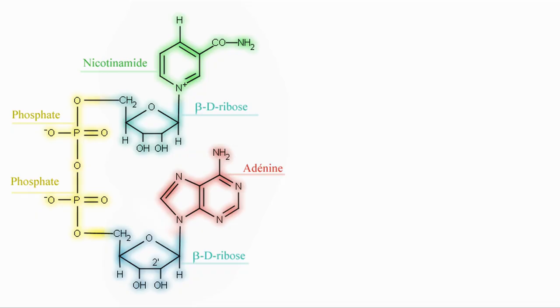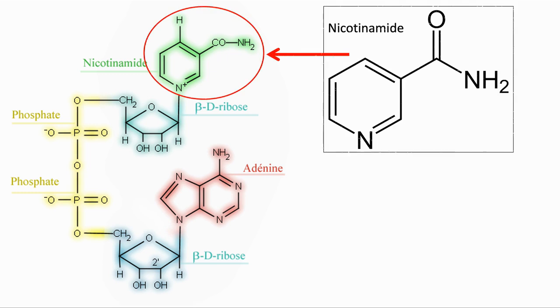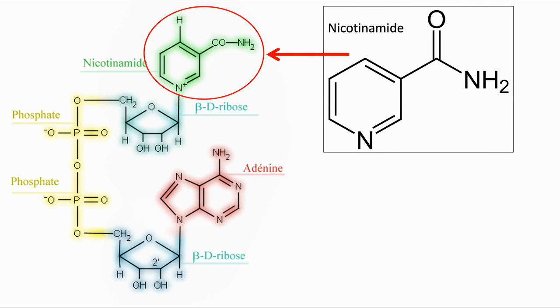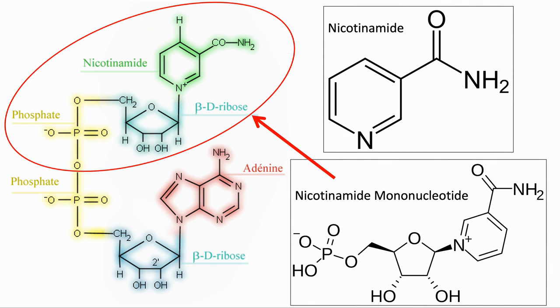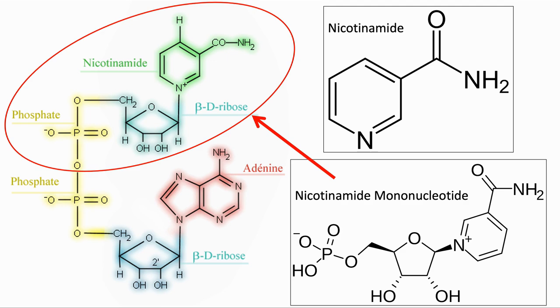Here is NAD, coloured so we can see the components. Nicotinamide is this section at the top. NMN provides this section of NAD and so is much closer to the target molecule.